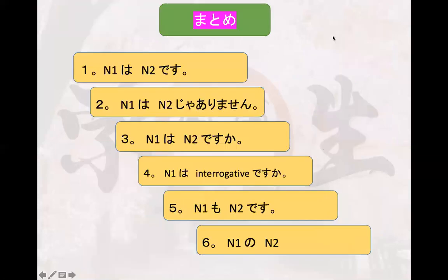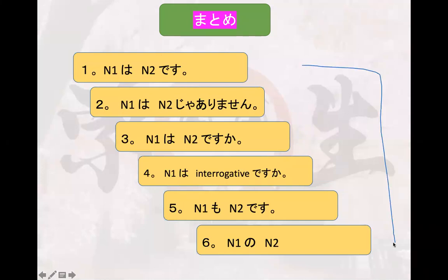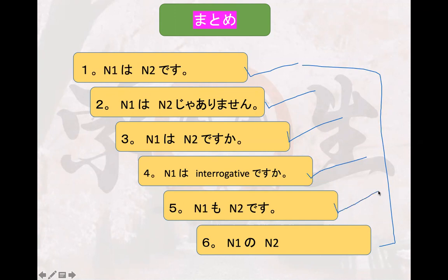We are on the last part, so we have our matome, or summary. These are the topics we learned in lesson one. First: the 'Noun 1 wa Noun 2 desu' pattern for affirmative sentences. Second: 'Noun 1 wa Noun 2 ja arimasen' for negative sentences. Third: 'Noun 1 wa Noun 2 desu ka' for yes/no questions. Fourth: 'Noun 1 wa interrogative desu ka' using question words. Also covered were the particles 'mo' and 'no.'